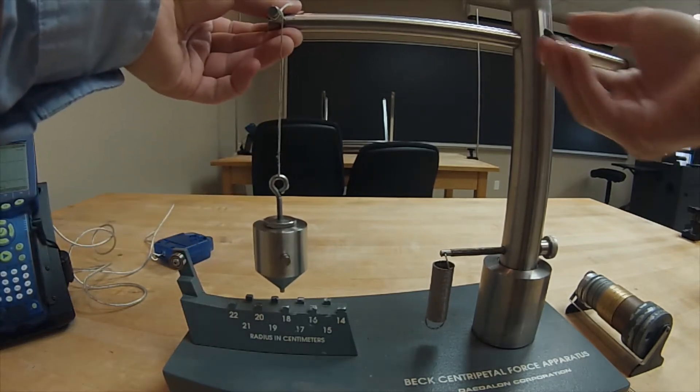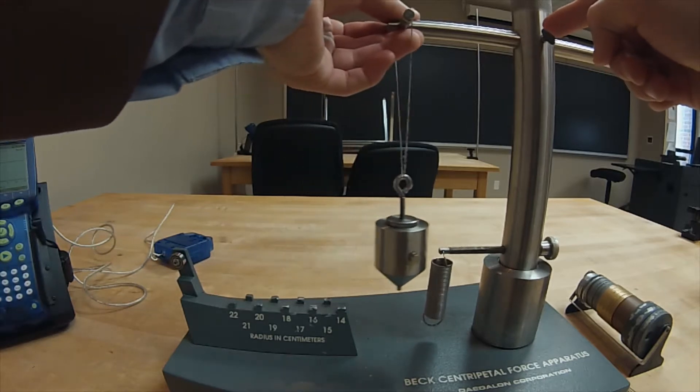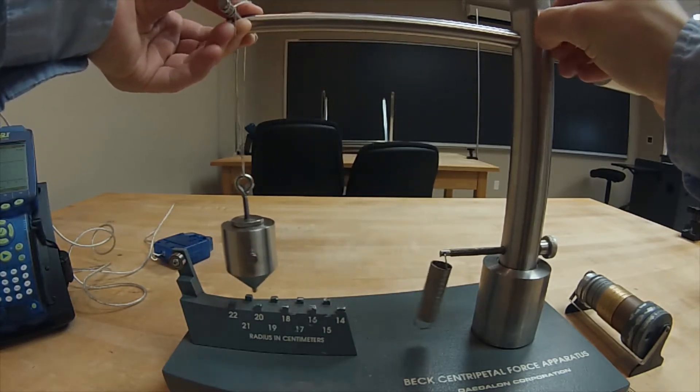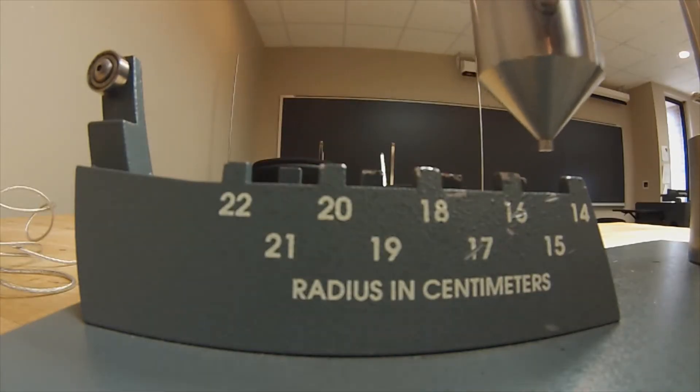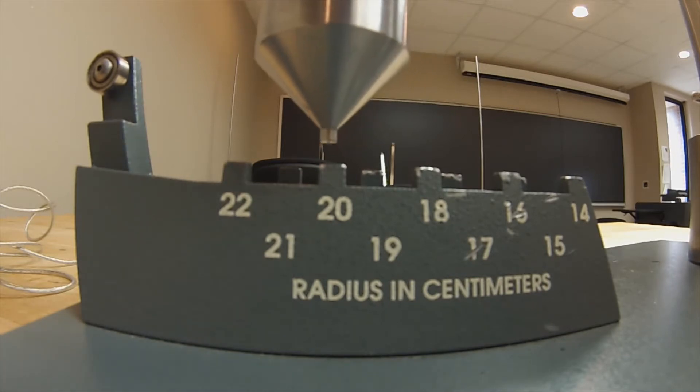To set the radius of rotation, we need to loosen the set screw on the crossbeam, and then we can move the crossbeam to align the tip of the bob with one of the radial markers. For this example, we will start by aligning the tip of the bob with a 20-centimeter mark.